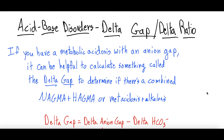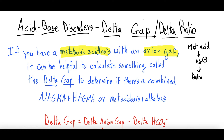The delta gap and delta ratio come into play when you have a metabolic acidosis with an anion gap. As covered in the last video, if you have a metabolic acidosis, the next step is to calculate whether there is an anion gap. If there is an anion gap, then you move on to calculating the delta gap or delta ratio. The terminology can be confusing — people say delta gap, delta-delta, or delta ratio — but they all look at the same thing using slightly different equations.